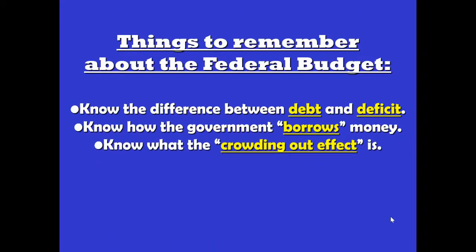Crowding out effect: thinking about aggregate demand and aggregate supply, you'll remember the vertical range of the AS curve — that's the economy working as hard as it possibly can. If the government starts a new spending campaign on education or housing for the homeless, they could outpace what the economy is capable of doing. They could put the economy in overdrive so that everyone suffers from higher interest rates and inflation. That would be bad for consumers, who are 70% of all spending, and business investment, which drives about 20% of growth.